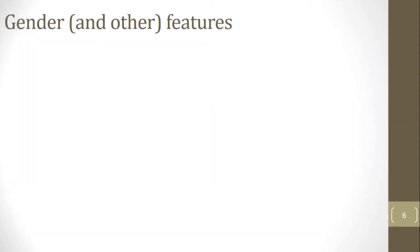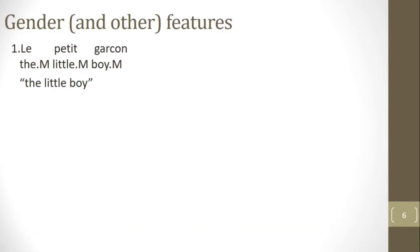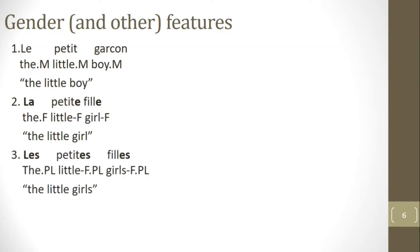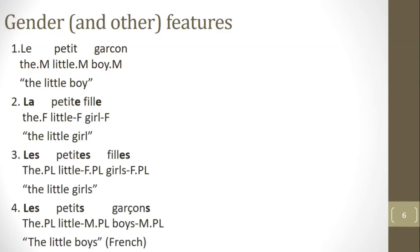Looking at gender in more detail: in French, 'the little boy' — boy is masculine, so the determiner and adjective also reflect the masculine. The masculine endings become much clearer when you look at the feminine: 'the little girl' — girl is feminine, and feminine marking is reflected on both the determiner and adjective. For the plural forms 'the little girls' or 'the little boys,' both gender and number are reflected on the adjective and on the determiner.